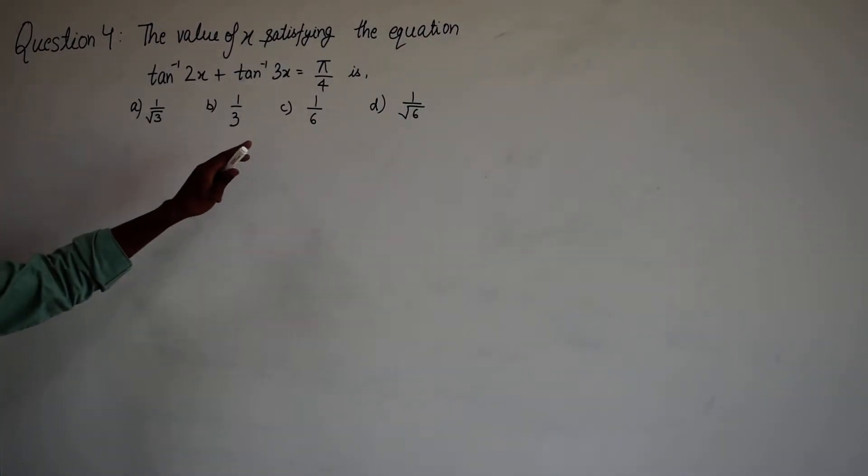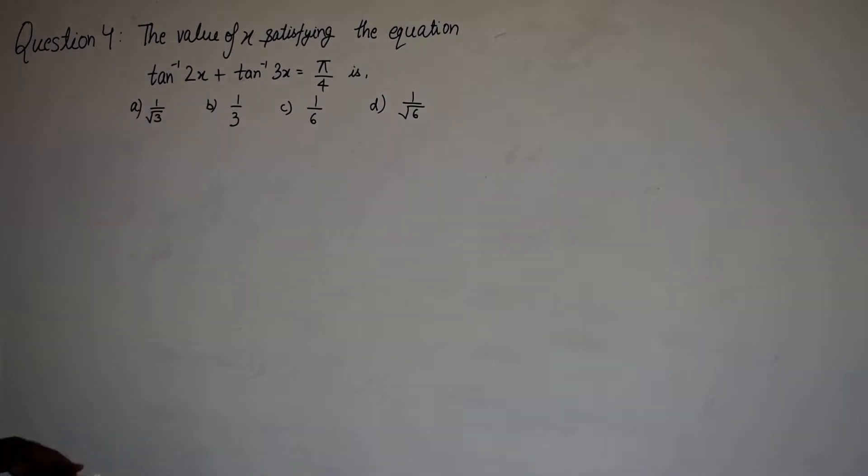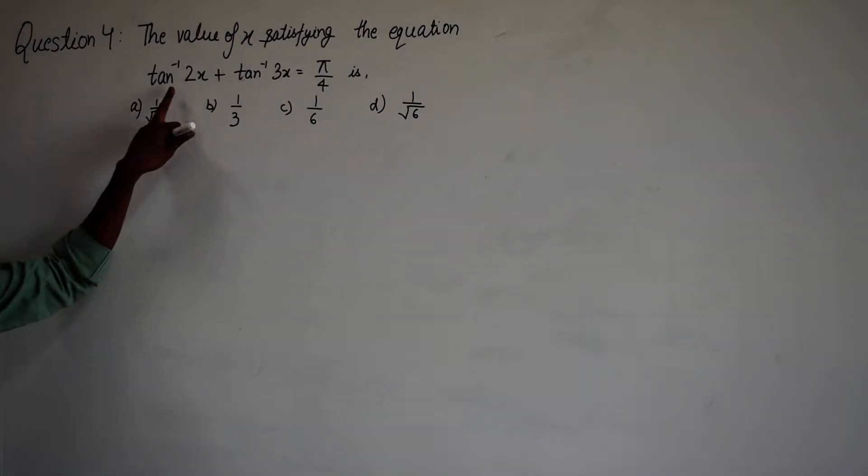In this question we have to find the value of x satisfying this equation: tan inverse of 2x plus tan inverse of 3x equal to pi by 4. In this type of problem we take tan on both sides.